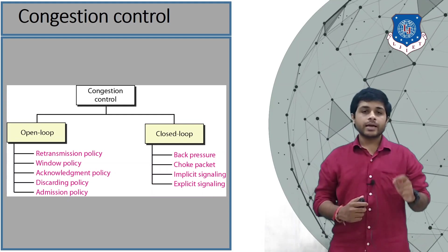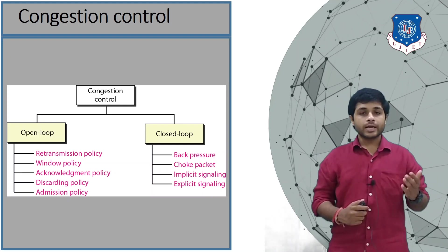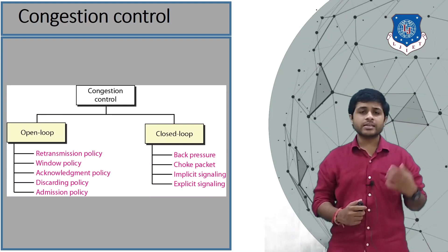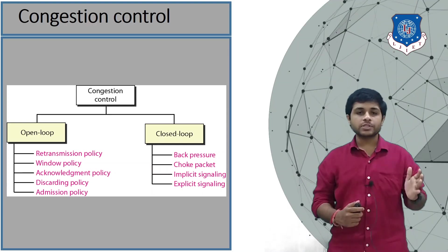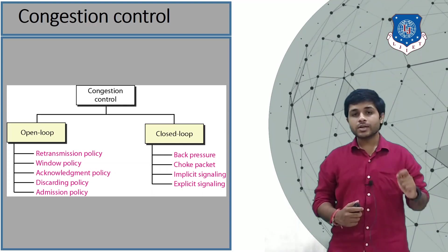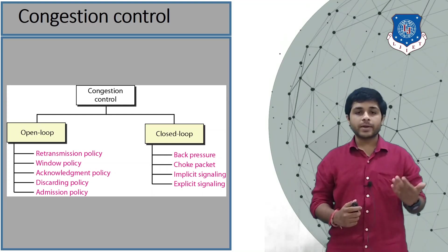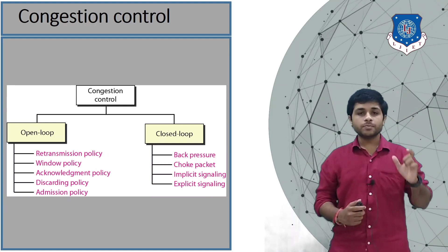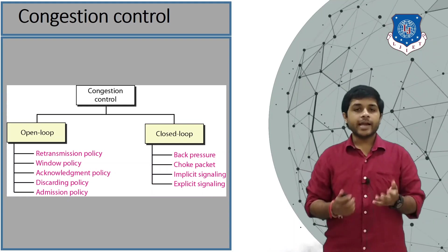The second type is the window policy. The window policy states that the sender's window size should be selected according to the capacity of the link. A sender can send four, eight, or sixteen packets at a time, but it should also consider the capacity of the link. If the link cannot carry more than five packets at a time, the remaining packets will be dropped. So window policy tells the sender to send packets according to the capacity of the link or receiver.